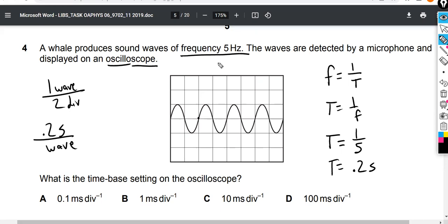So if we know that this wave is taking 0.2 seconds to propagate, 0.2 seconds per wave, and there's one wave every two divisions, then we multiply this out: 0.2 seconds per two divisions. Waves cancel, and we have 0.2 divided by 2, which is 0.1. So we have 0.1 seconds per division. That's telling us how much time each division represents.